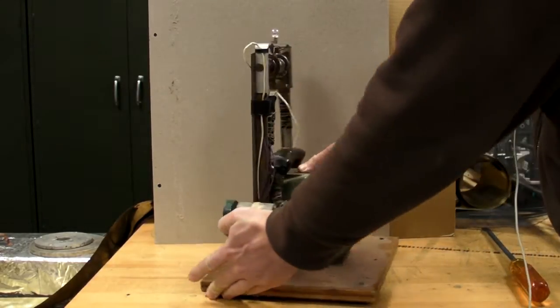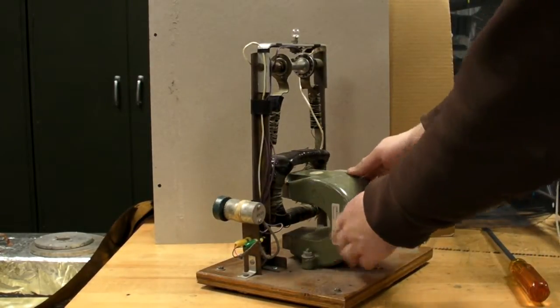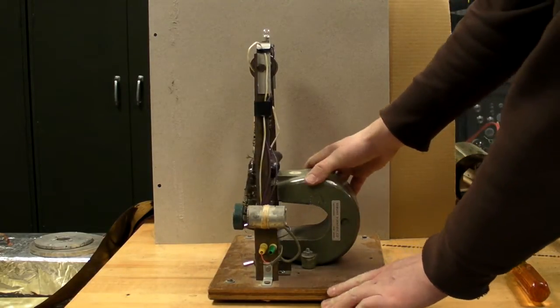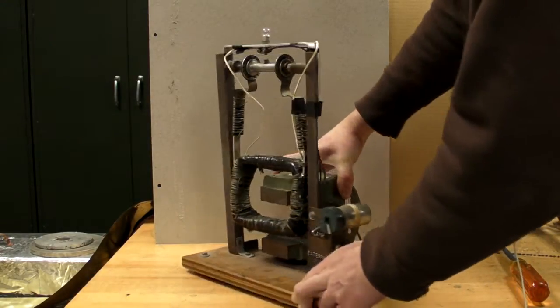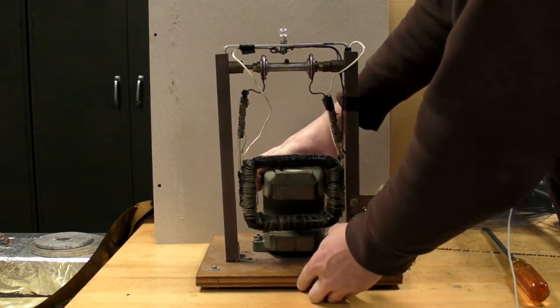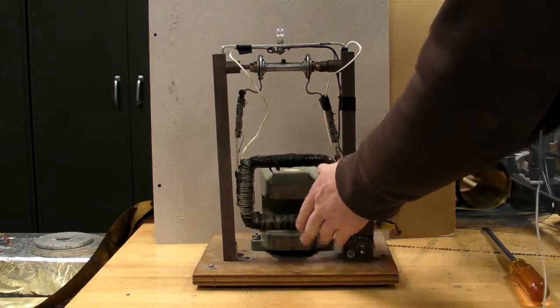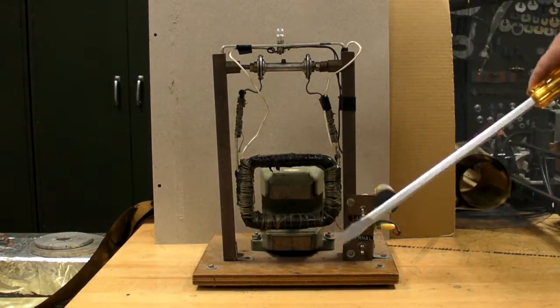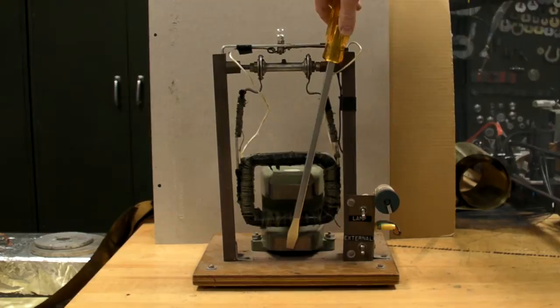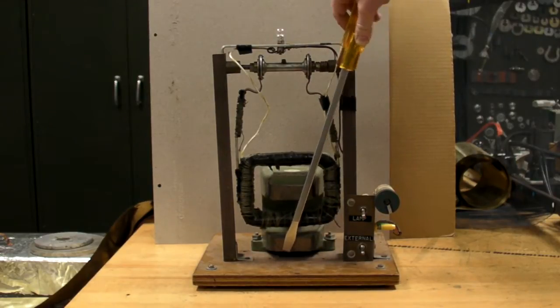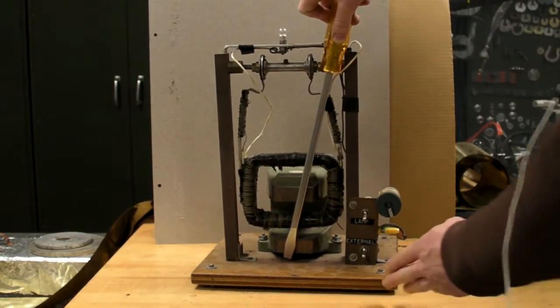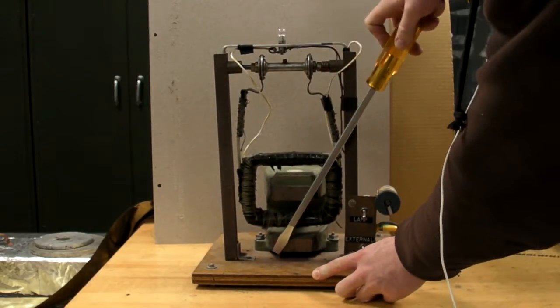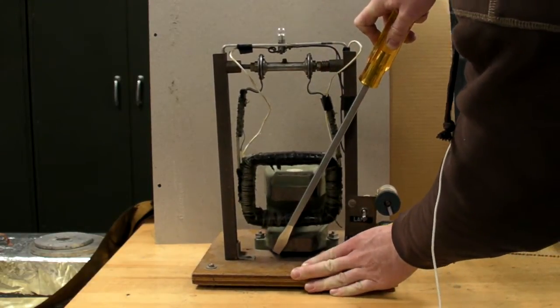It's got this really big, very strong horseshoe magnet here. It says Edmund Scientific's on the side, so it might have been purchased just for this or it might have been taken out of an old microwave oven because early magnetrons used really strong, really big magnets just like this, and you can see just how strong this thing really is. It's almost on the same order as neodymium magnets of today.